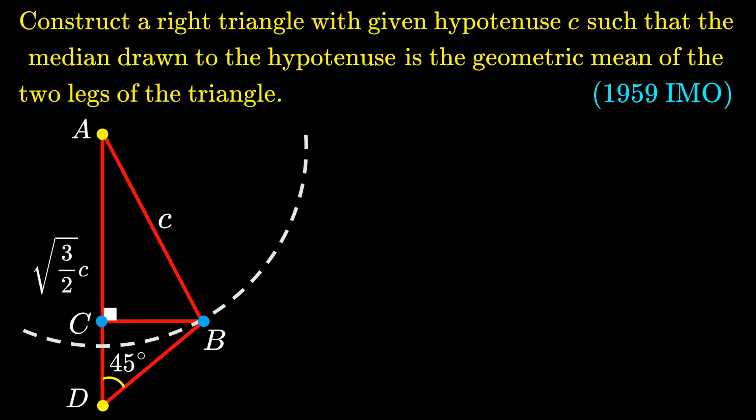This completes the construction of triangle ABC, and the last thing to do is verify that this is indeed the desired triangle ABC. This is essentially the reverse direction of what we have done at the start.